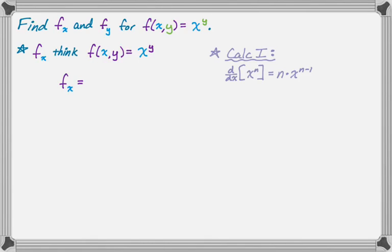So partial x is going to be, bring the exponent down, and then subtract 1 from the exponent, and you're actually done. So that's going to be partial x for this function.